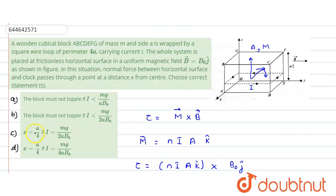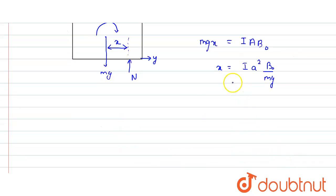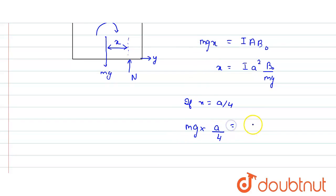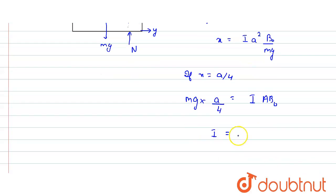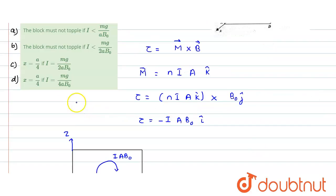For the part where x equals a/4: substituting x = a/4 into the equilibrium expression gives mg·(a/4) = i·a²·B₀. Solving for i: i = mg / (4·a·B₀). Checking the options, option D is correct and option C is incorrect.